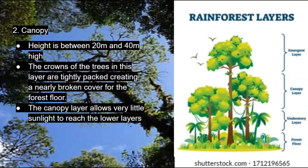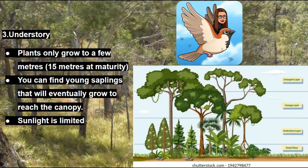Next, we have the second layer — the canopy layer. These trees grow to a height of about 20 to 40 meters. The crowns of the trees in this layer are tightly packed, creating a nearly unbroken cover for the forest. Because they are so tightly packed, the canopy layer allows very little sunlight to reach the lower layers.